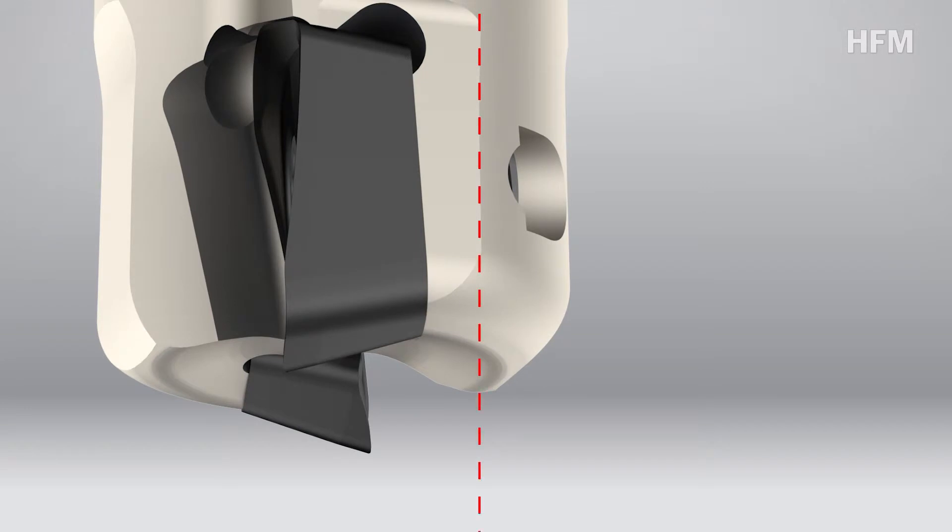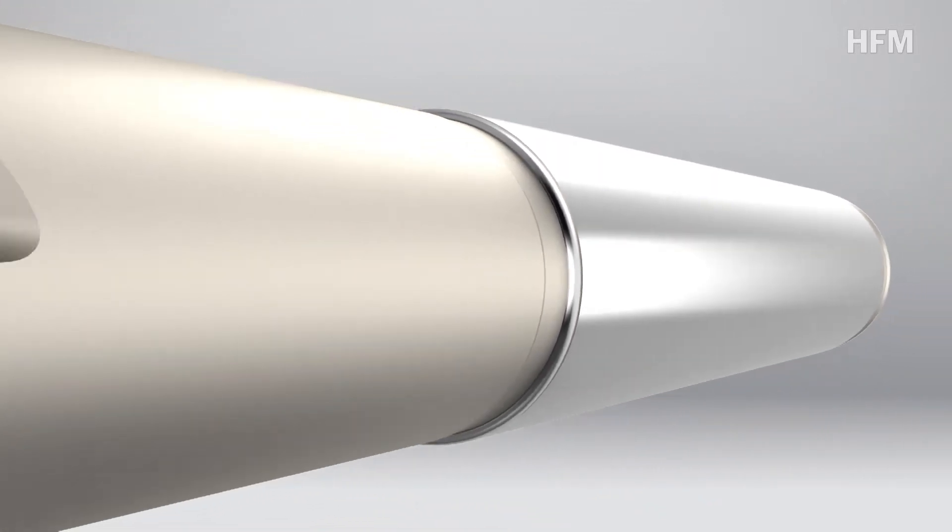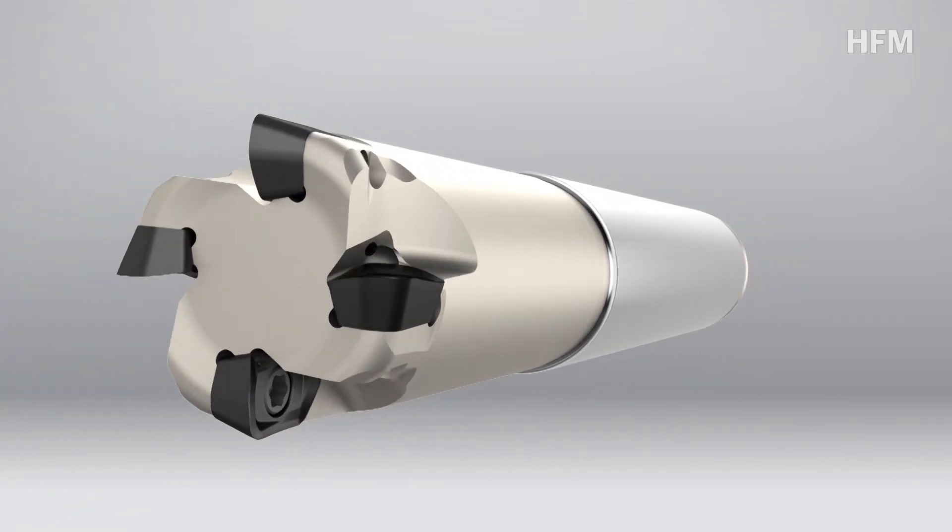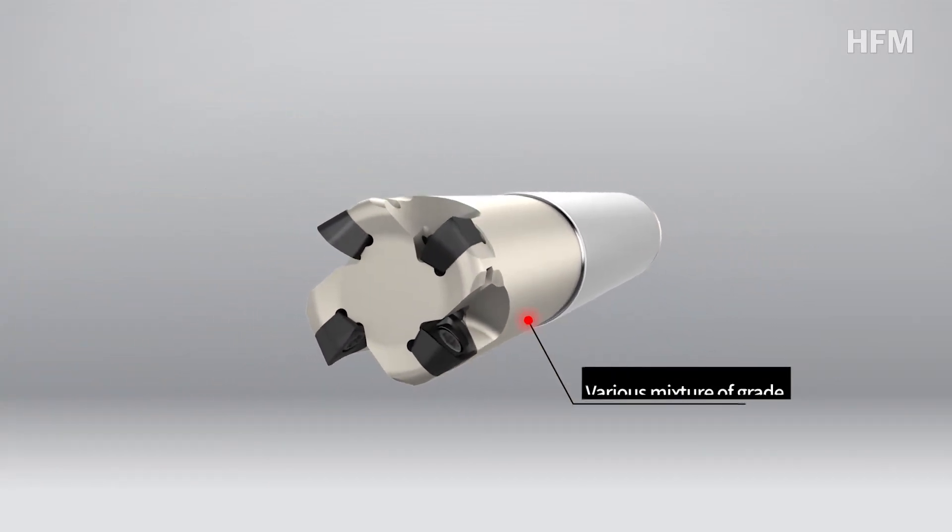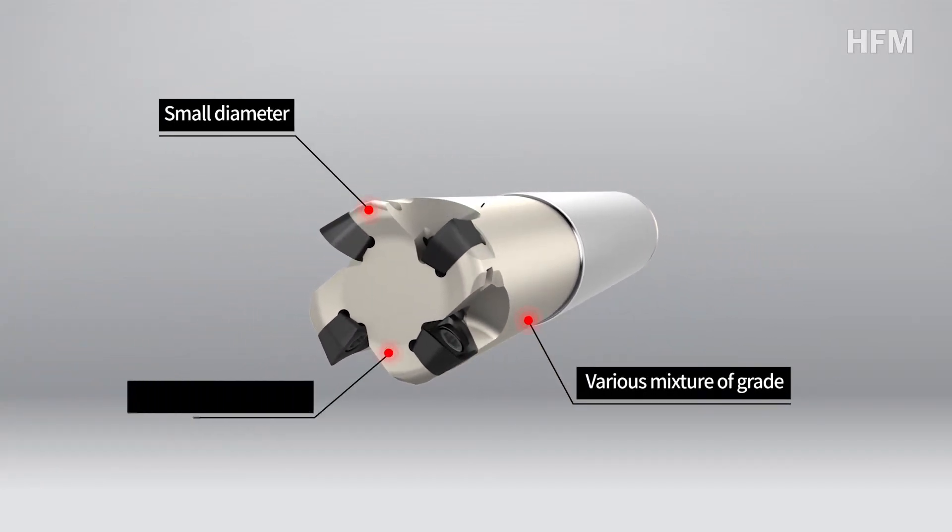For holder setup, axial rake angle is negatively formed to strengthen toughness, reducing contact surface with workpiece, minimizing tool vibration with flank side and material, increasing chipping expectancy and realizing stable high hardness processing.